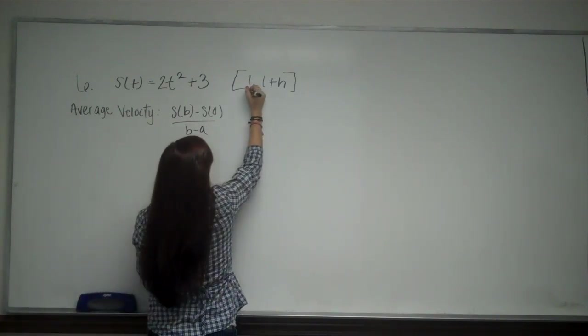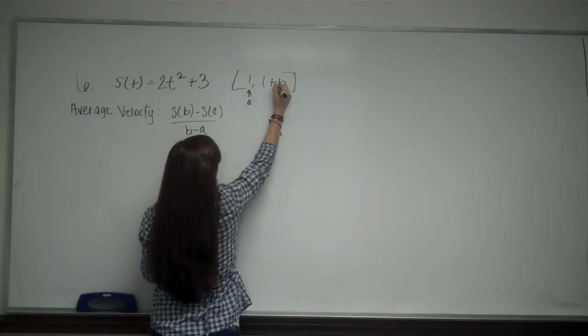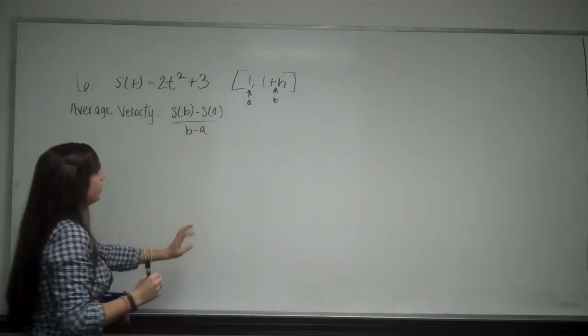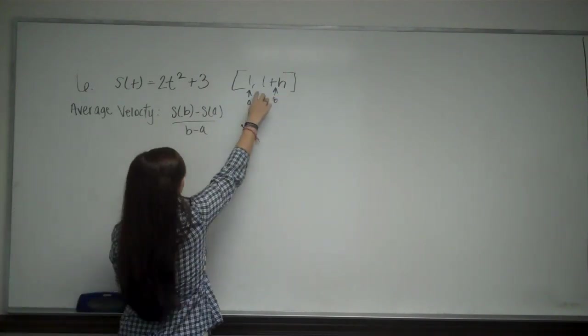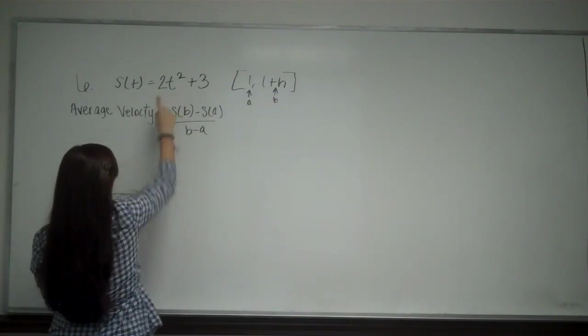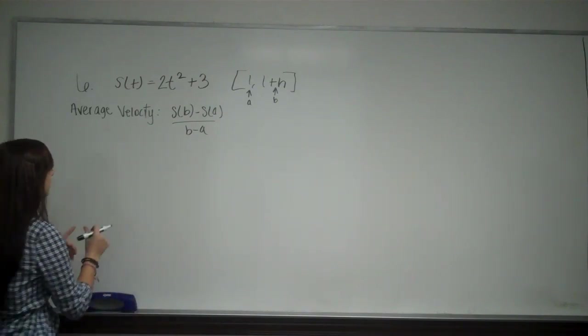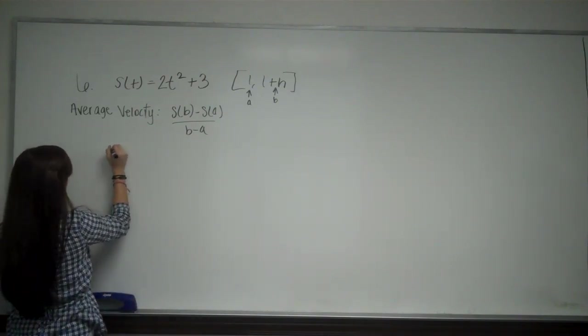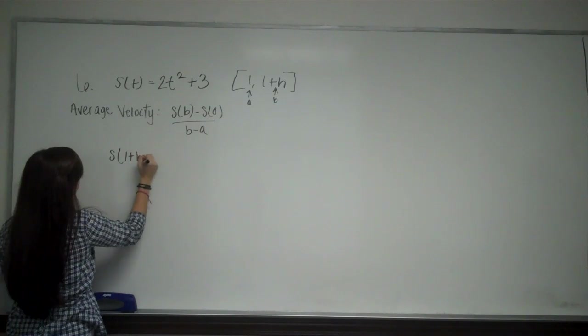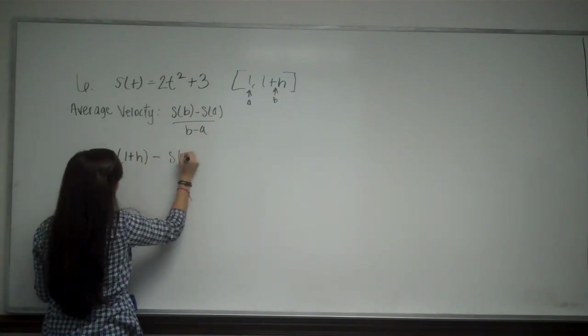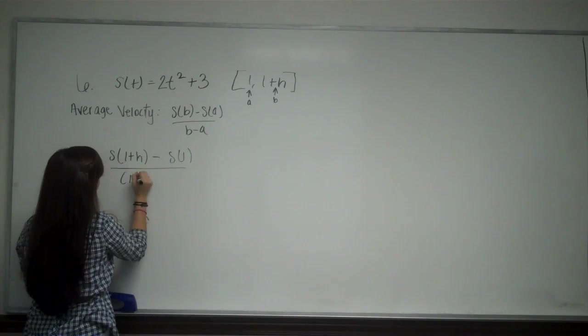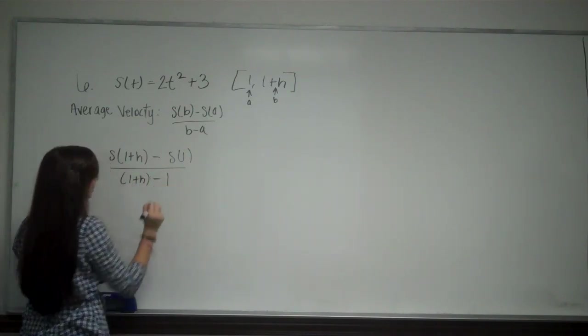Where this is going to be n, and this is going to be b. All I'm going to do is plug these two coordinates into that equation. So I'm going to have S of 1 plus h minus S of 1 over 1 plus h minus 1.